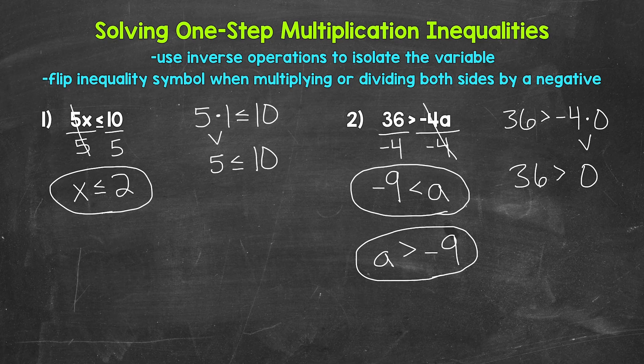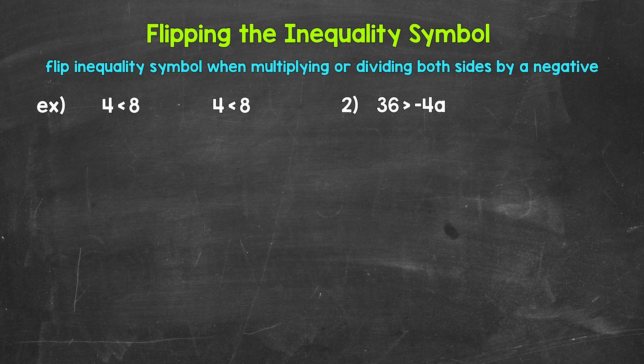Before we move on to division, let's take a look at flipping the inequality symbol and why this happens when we multiply or divide both sides by a negative. Let's start with the example: four is less than eight. Is this inequality true? Of course — four is less than eight.